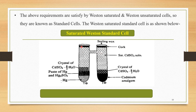The top part of both arms — left arm as well as the right arm — is sealed with sealing wax to minimize or stop the evaporation or loss of water. This is the saturated Western standard cell, which obeys all of the important requirements to work as a standard cell.